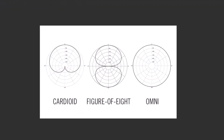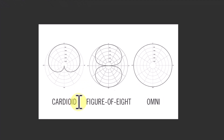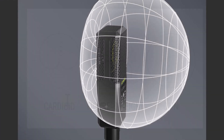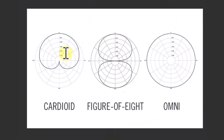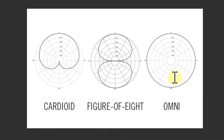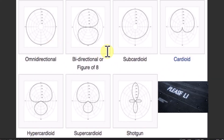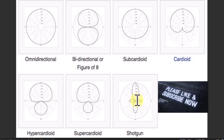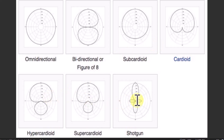Number five on our list is sound patterns. A cardioid mic is simply a directional mic — it picks up sound from in front of the mic, which is what I'm using now. A figure-eight mic is good for interviews where you want to pick up sound from both sides. Omnidirectional picks up sound from all around. There are other patterns as well, but almost everybody listening will want a cardioid mic or a bidirectional, also called figure-eight, mic.